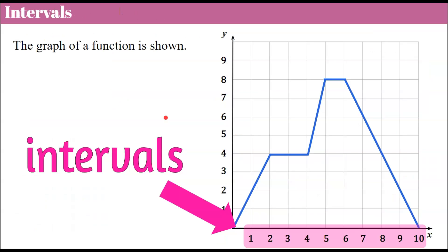Now let's talk about intervals. The graph of a function is shown — now knowing that we had qualitative graphs without intervals on them. Here are intervals: they define specific numerical values on our axes. Our X is increasing by one left to right, and our Y is increasing by one. That's what we call an interval. The intervals don't have to increase by one, as long as each interval represents the same distance.